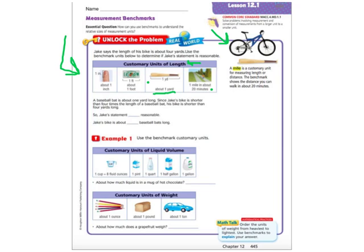So they've lined up the baseball bat here underneath the bike, and there's no way that we could fit four of them. So his statement is not reasonable. So right here you would write is not.